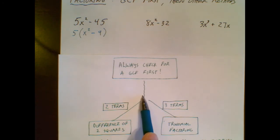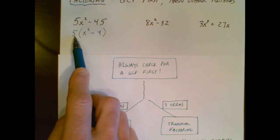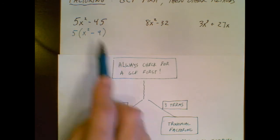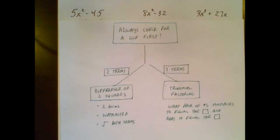Now I go down this flowchart and I ask myself, are there two terms or three terms? I'm only looking at this piece. The GCF is just going to come along for the ride. So in here, there are two terms.